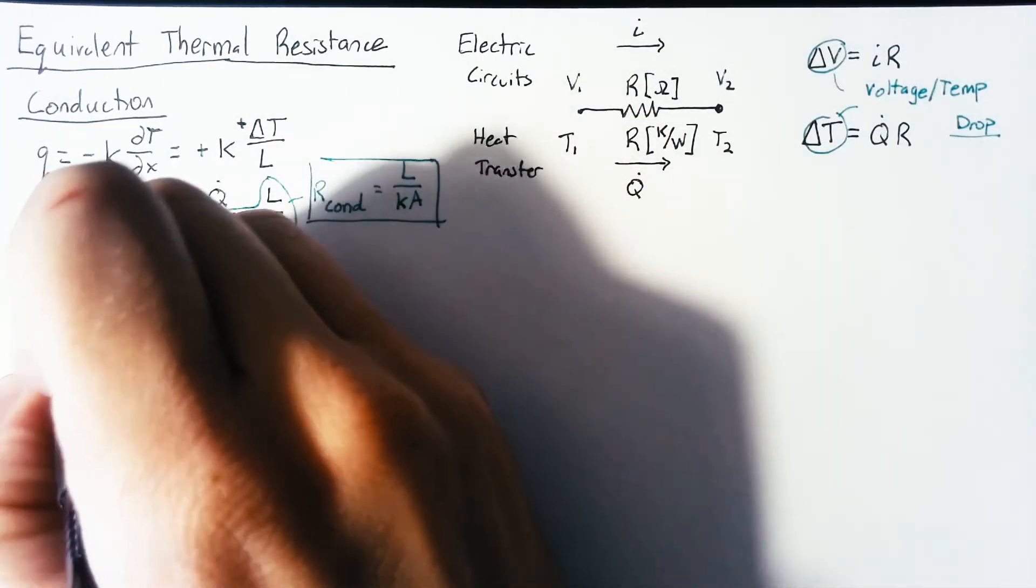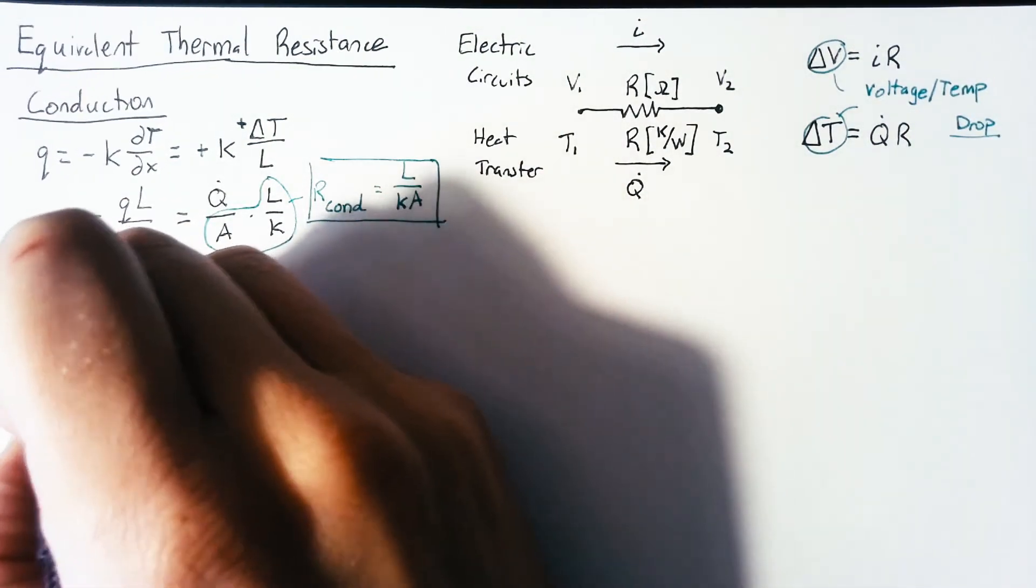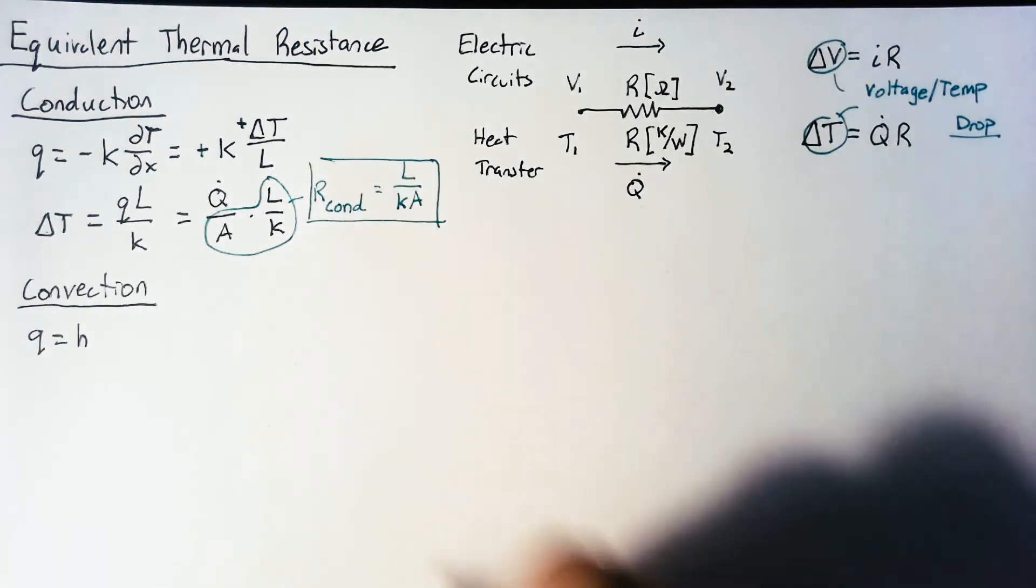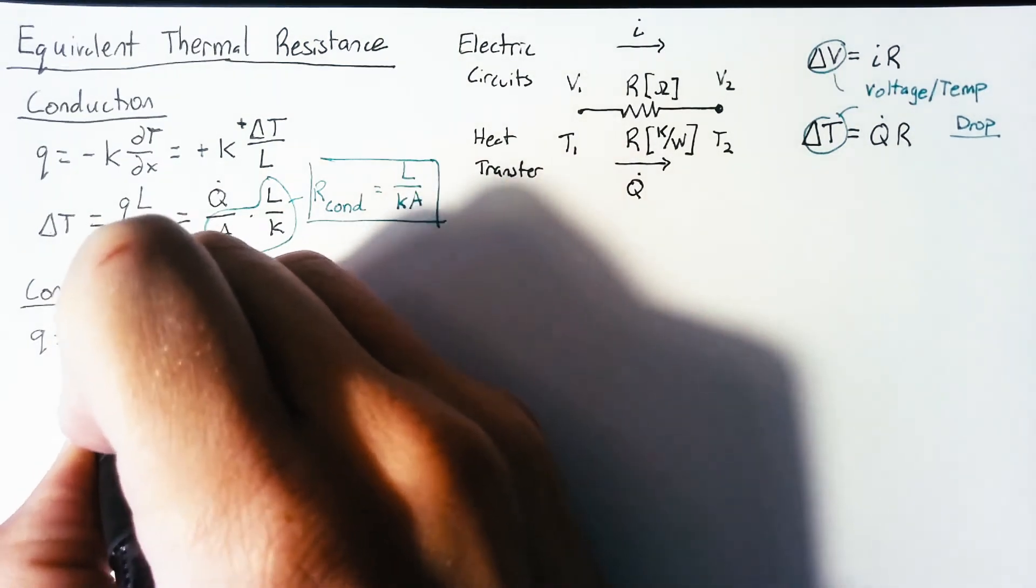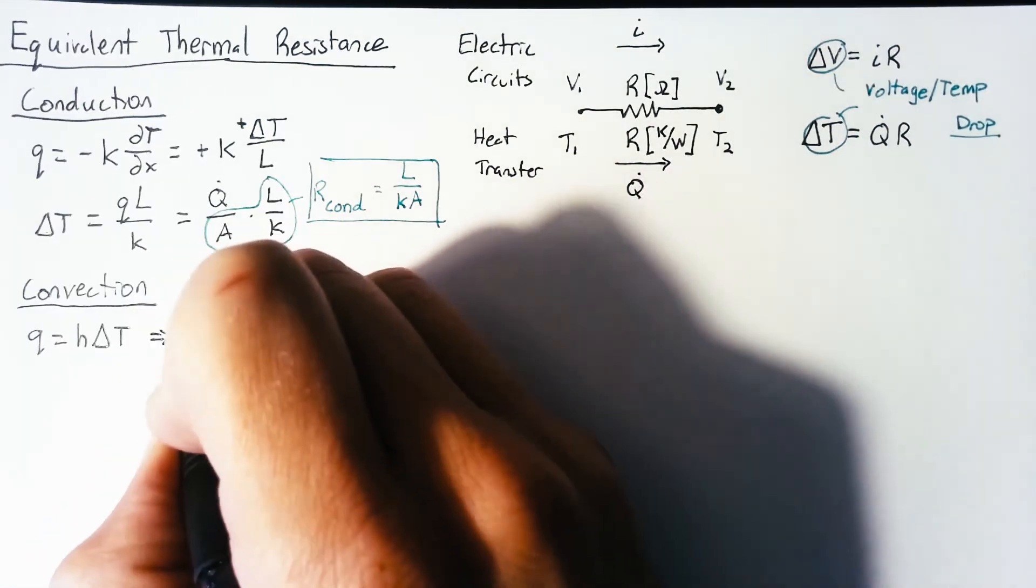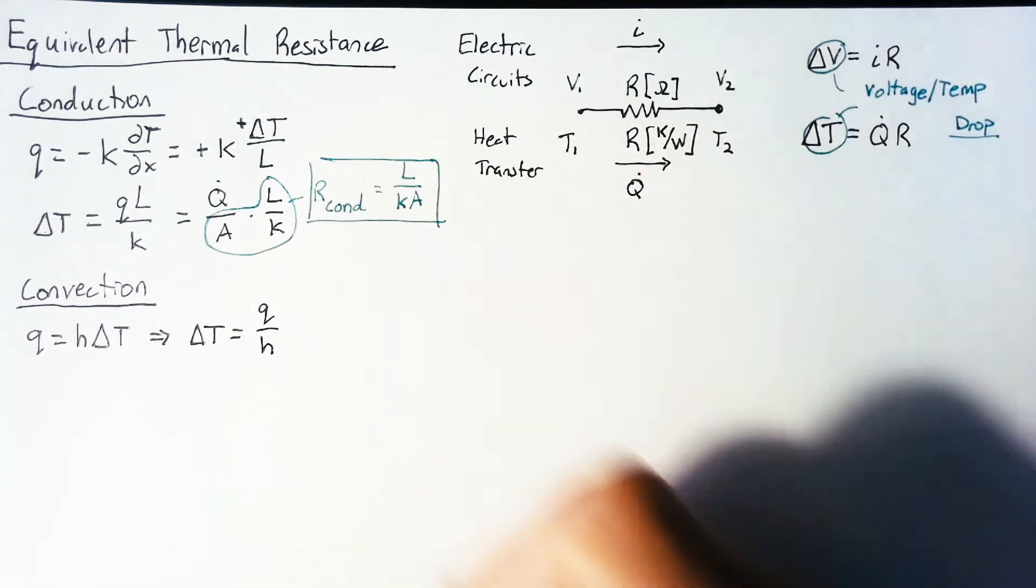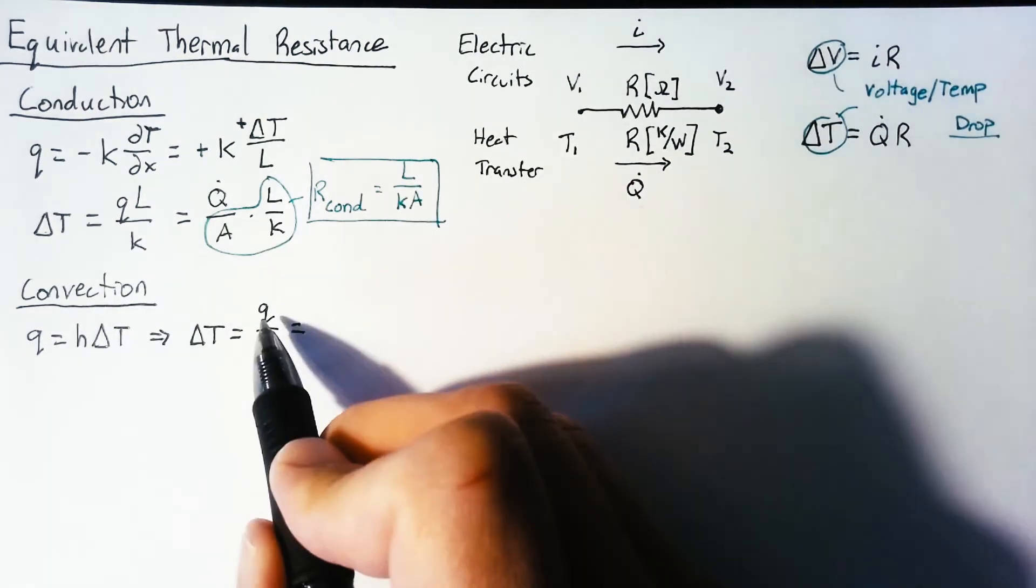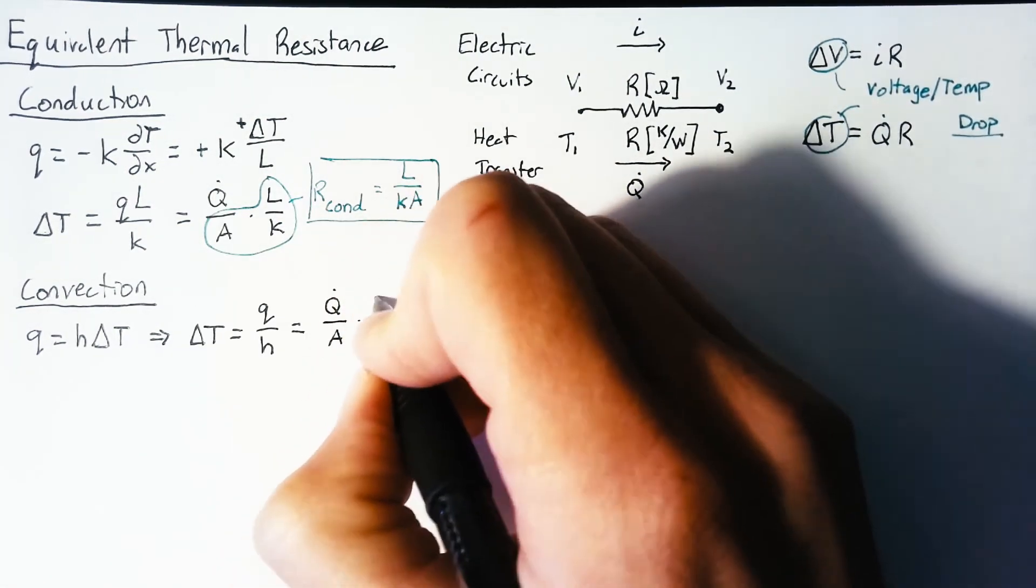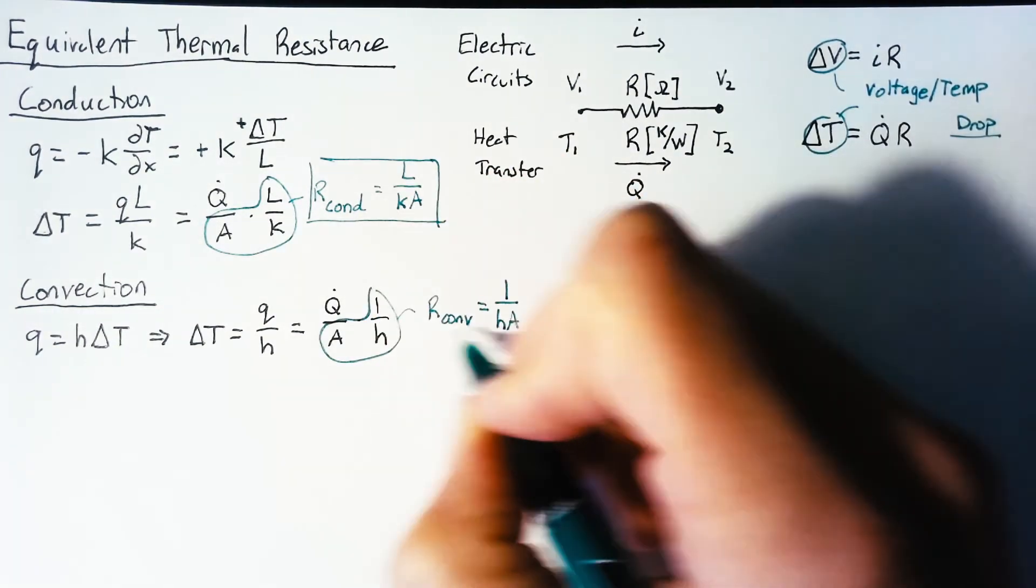So with conduction done, let's go look at convection. For convection, we use the formula Q is equal to some film coefficient or heat transfer coefficient multiplied by our change in temperature. So once again, we're going to solve for delta T, which for this case is just Q over H. And again, we're going to turn this lowercase Q into a capital Q, so we get Q dot over A times one over H. And our resistance is just going to be this one over H A.